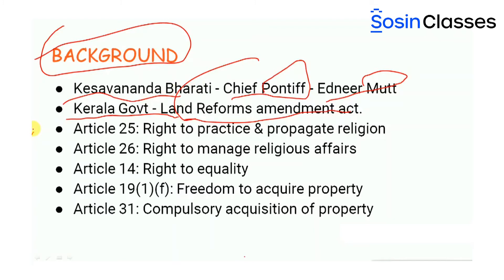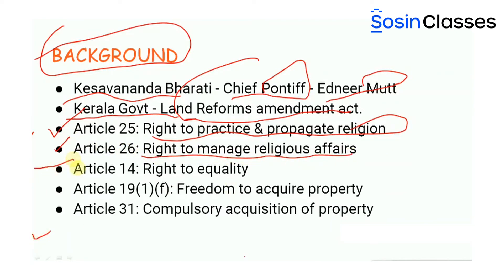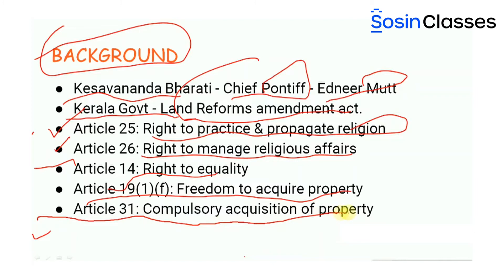In 1970, His Holiness Keshavananda Bharati moved the Supreme Court to enforce the rights guaranteed to him under Article 25 (right to practice and propagate religion), Article 26 (right to manage religious affairs), Article 14 (right to equality), Article 19 (freedom to acquire property), and Article 31 (compulsory acquisition of property).